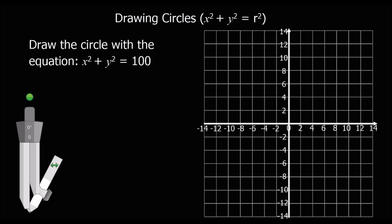Okay, here we're going to draw some circles. We've got this form x squared plus y squared equals r squared, and you have to recognize that whenever you've got x squared plus y squared equals something, it's a circle.